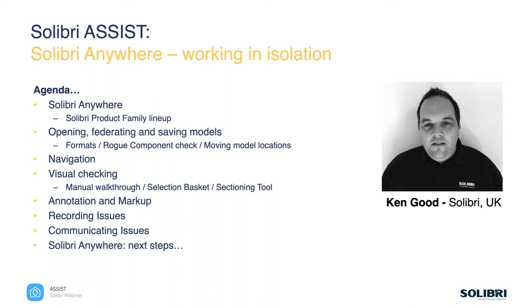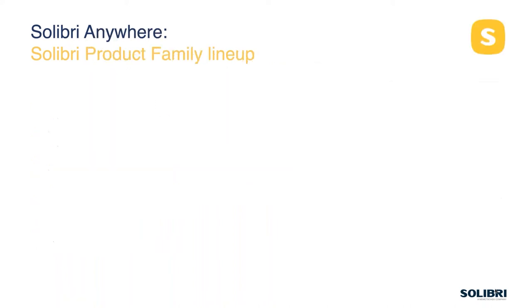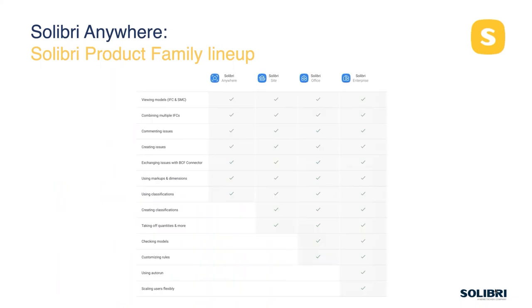The only other slide before we get into the software is just this family lineup. The Celibri product family consists of four products. Today we're going to be looking at Celibri Anywhere. We also have Celibri Site, which adds a few more functions on top. Celibri Office is the main product that does all of the checking and customization of rule sets and back-office content. Then we have the Enterprise product, which is all to do with scalability for larger corporate global clients.